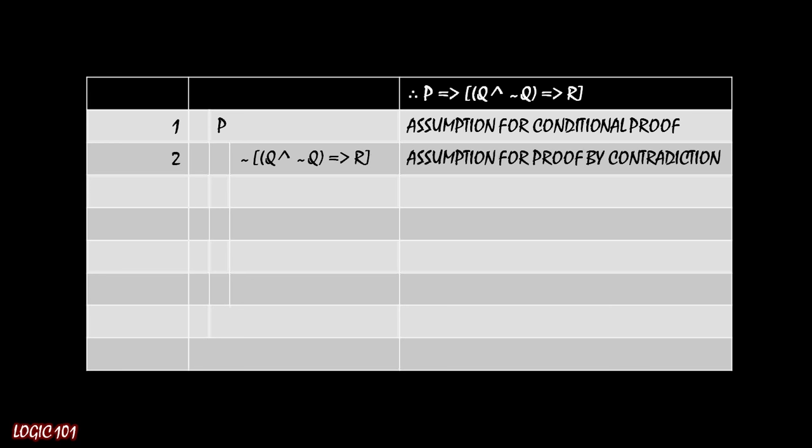Well, we have a negation on the outside, and a good way of removing negations is to use DeMorgan's. But we can only use DeMorgan's on or statements and and statements, not these conditionals. But we've seen this before. We know how to get rid of conditionals. We can use conditional exchange to switch that out. So we can negate the antecedent of the conditional statement. And then morphing line 2 into line 3, we get ¬(¬(Q ∧ ¬Q)) ∨ R.